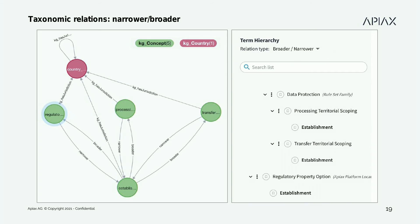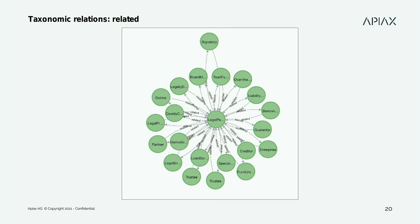We also support additional taxonomic relations in our knowledge graph. You can see an example for narrow/broader — each term can have a broader term. In this case, establishment has broader terms for the product in which we use the term, for example processing territorial scoping. Also on the bottom right you can see regulatory property option, which is the type of term — this is used in our tree as a regulatory property option. We also support a related relation, where each term can have a related concept. For example, legal person is related to signatory depth or other concepts in the knowledge graph.